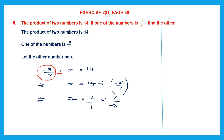Now let's see if we can cancel something. We can cancel 8 and 14 — both are even numbers, so both are divisible by 2. 2 fours are 8, so that will be minus 4, and 2 sevens are 14. Now we're going to multiply the numerator: 7 into 7 — 7 sevens are 49, and the denominator is minus 4. So we have found the value of x — x is equal to minus 49 by 4.